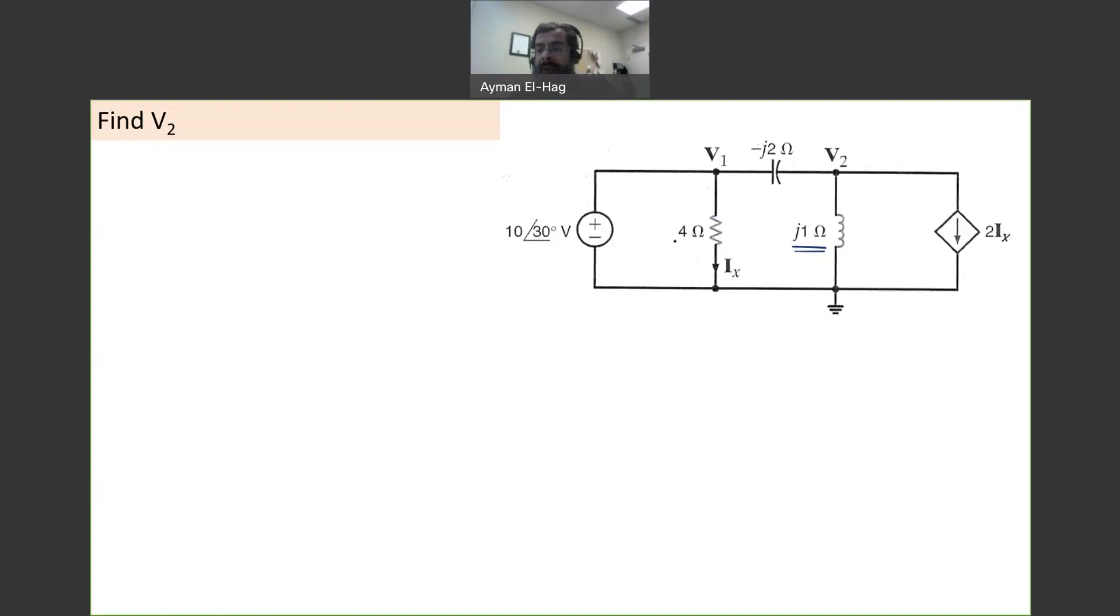So when you look here, we have a dependent source. It's a current dependent current source equal to 2Ix. And here is Ix. Now, we have here a voltage source. We have these two nodes with the ground, V1 and V2.